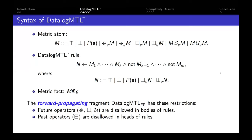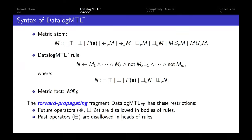After having defined the syntax, I'll briefly discuss the forward propagating fragment. The key idea is that we want rules to propagate information only to the future. So we disallow future operators from the bodies of rules, and we disallow past operators from the heads of rules. This forward propagating fragment will be important when we analyze the complexity of the reasoning problem.